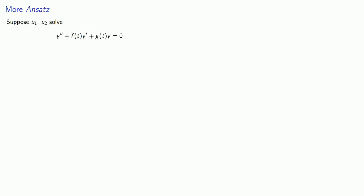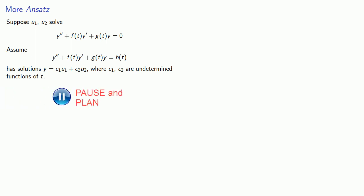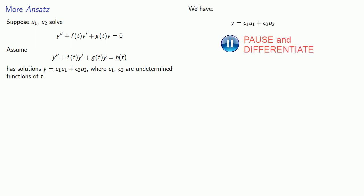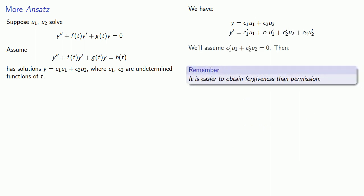Suppose u1 and u2 solve the homogeneous equation and assume the non-homogeneous equation has solutions y equals c1u1 plus c2u2 where c1 and c2 are undetermined functions of t. We'll differentiate and assume c1 prime u1 plus c2 prime u2 equals zero. Why not? If it works we'll have a solution and all is forgiven. We'll record that assumption over here.